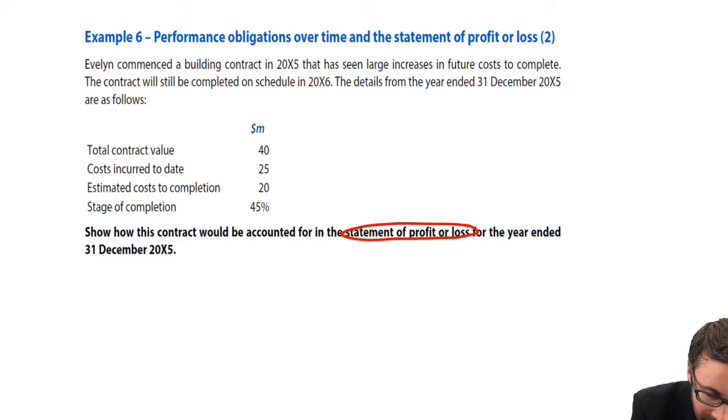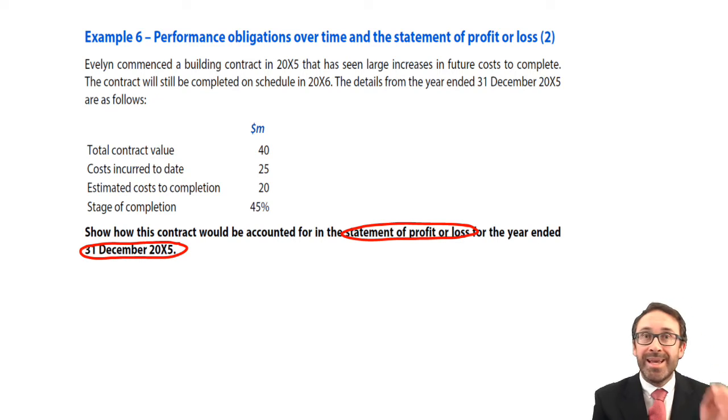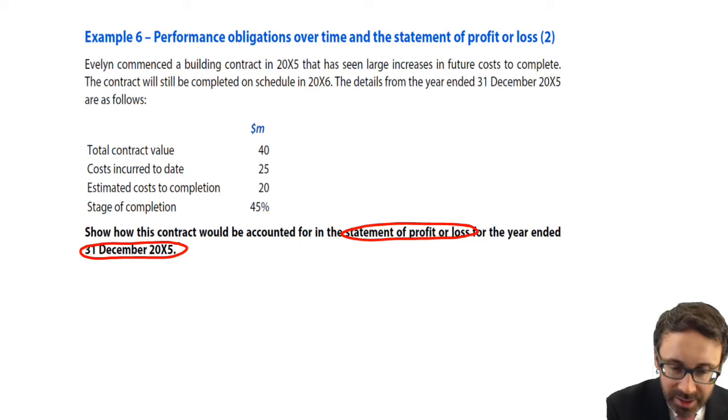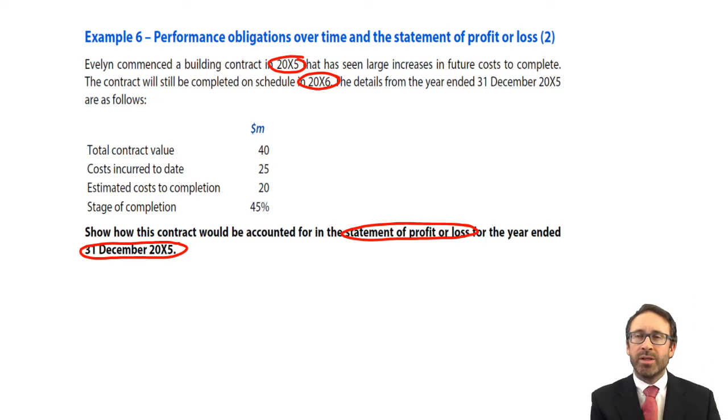Again, we're looking at the year-end December 20X5. Evelyn commenced the building contract in 20X5 that's seen a large increase in future costs to complete. It will still be completed on schedule in 20X6. It started in 20X5, going till 20X6, spanning an accounting period. Therefore, the performance obligations are likely to be satisfied over that period of time.